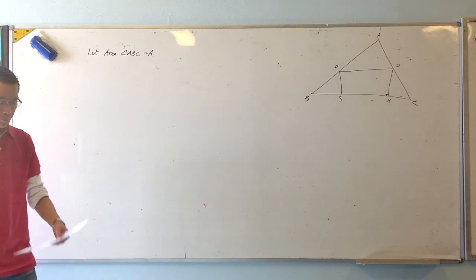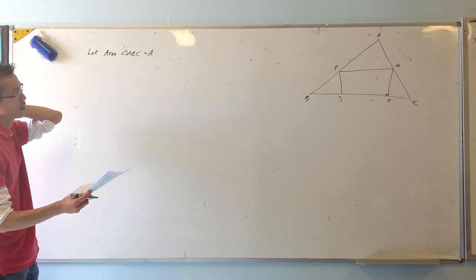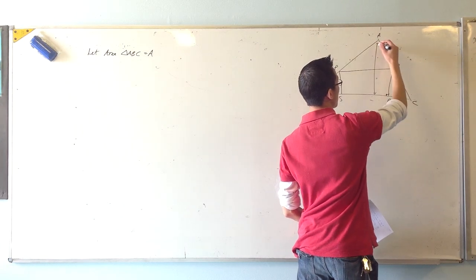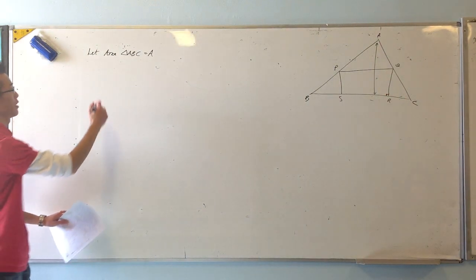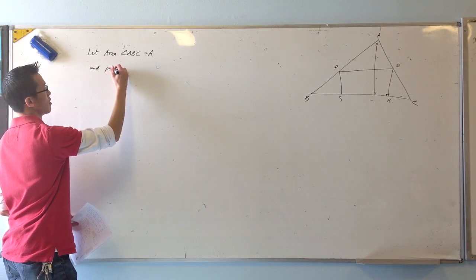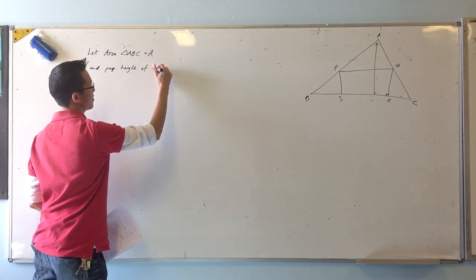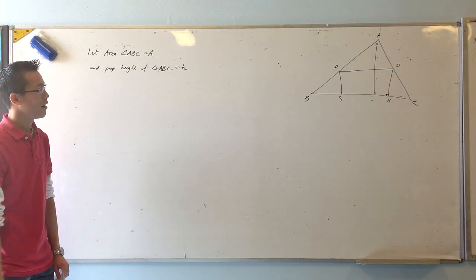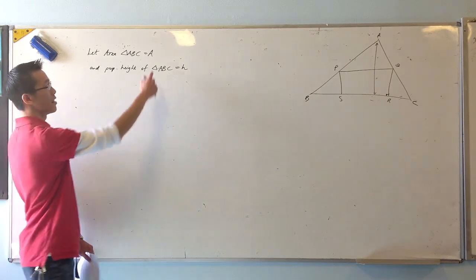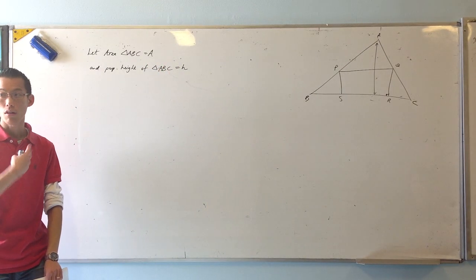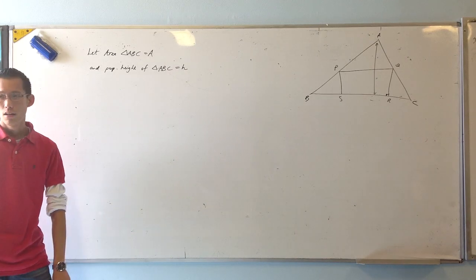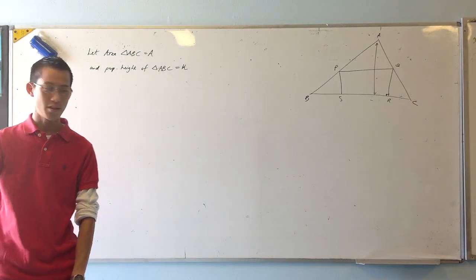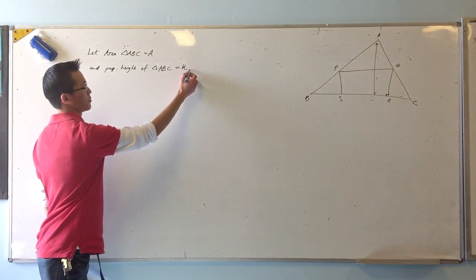I also need to know the perpendicular height of this whole triangle. I've got this length here - I'm going to call that perpendicular height H. I could work out the base, but I don't need to work out the base as another variable because the base is going to be a function of these two. I really should make this capital H - constant.